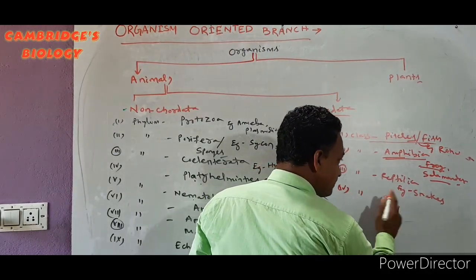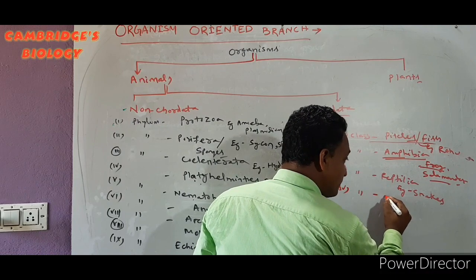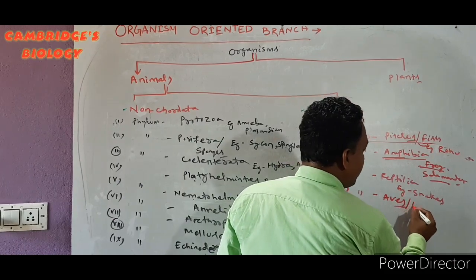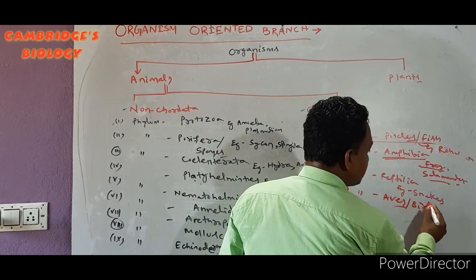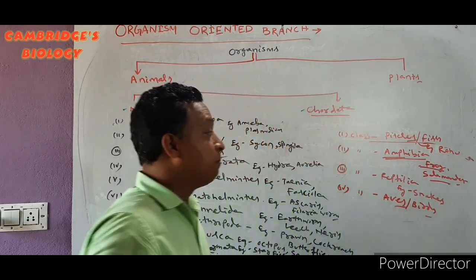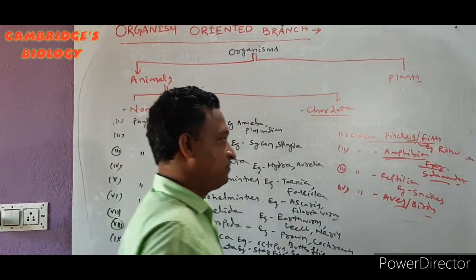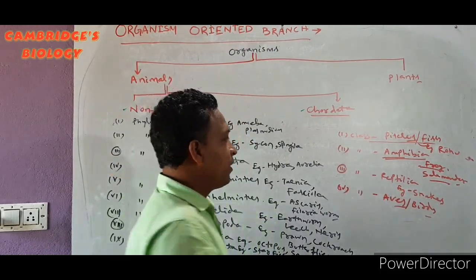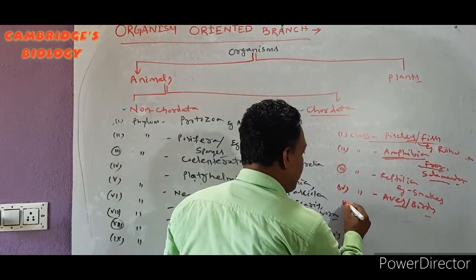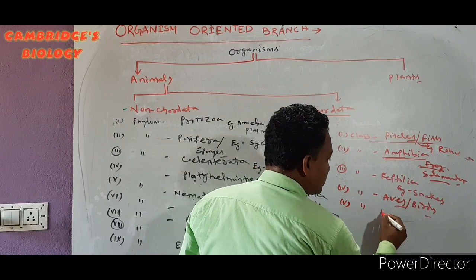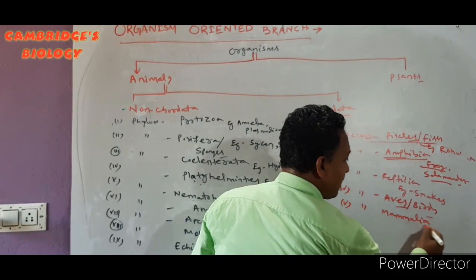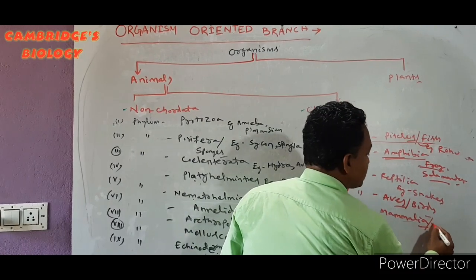The next class is Aves, or Birds — examples: Pigeon, Peacock. The last class is Mammalia, or Mammals.